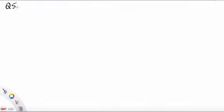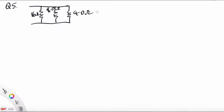So let's start on the calculations, beginning with question five. Here we have three resistors in parallel. We have 16 ohms, 8 ohms, and 4 ohms. We want to find the equivalent resistance for this combination.